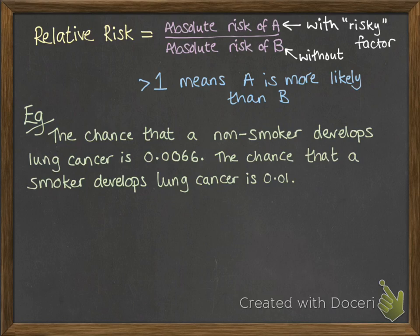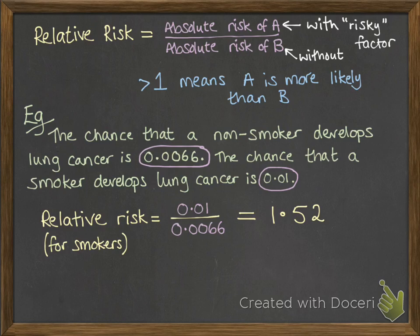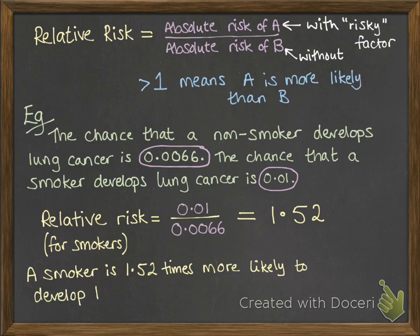If we've got the chance that a non-smoker develops lung cancer is 0.0066. The chance that a smoker develops lung cancer is 0.01. The relative risk for smokers, so how much more likely are they? We put their risk at the top. And that's the 0.01. And then the non-smoker's risk goes on the bottom. And we calculate that answer. So we get 1.52 if you put that into your calculator. What that means is that a smoker is 1.52 times more likely to develop lung cancer than a non-smoker.